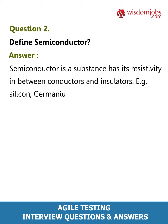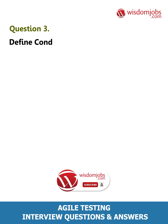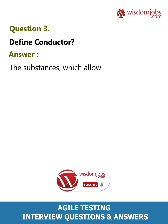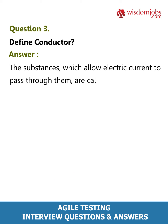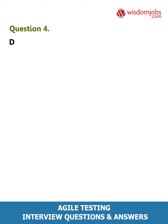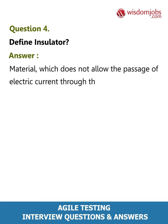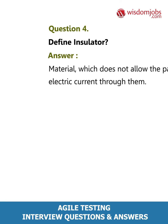Examples of semiconductors include silicon and germanium. Question 3: Define conductor. Answer: The substances which allow electric current to pass through them are called conductors. Example: copper. Question 4: Define insulator. Answer: A material which does not allow the passage of electric current through it.